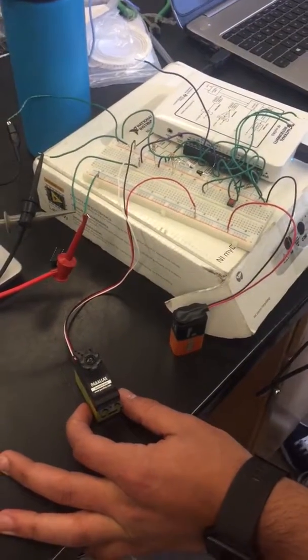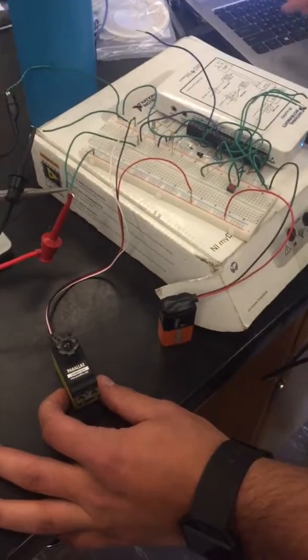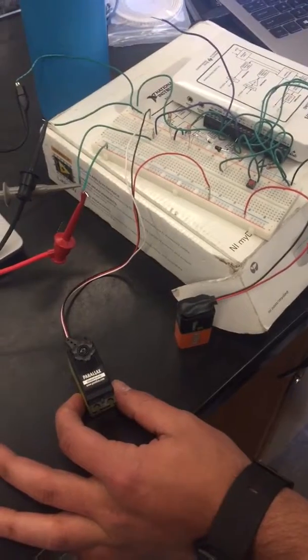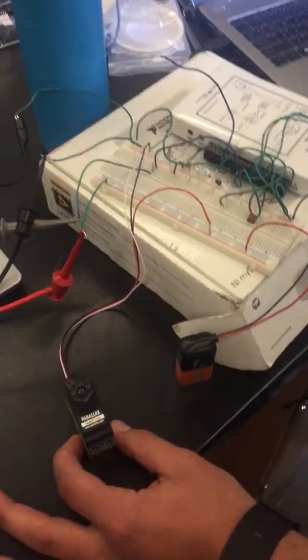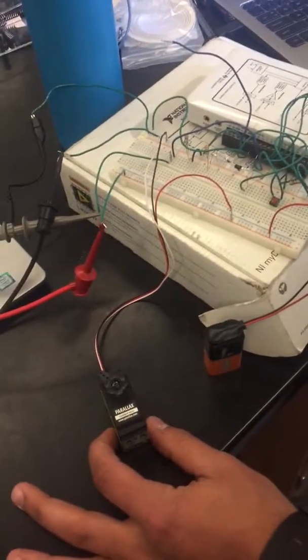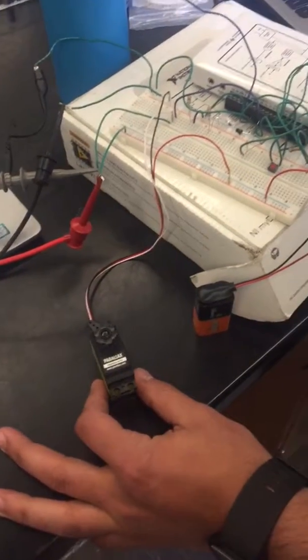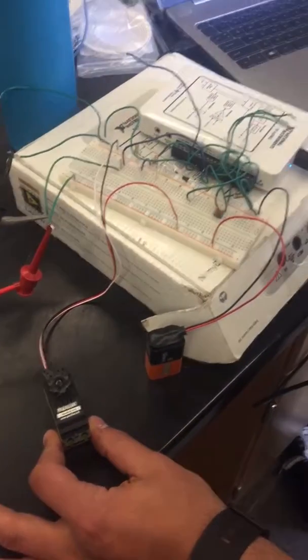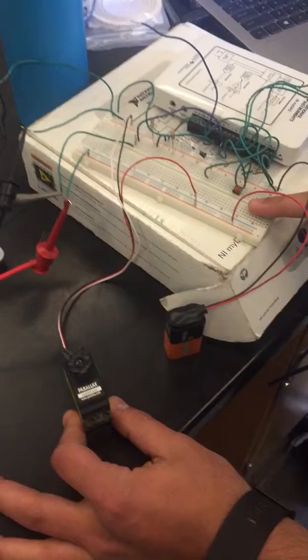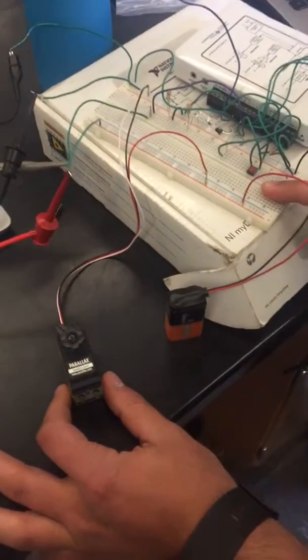All right, this is electronics group number three with Shady, Michael, and Matt. We are doing project four with a servo motor, an IR LED, a photo transistor, and a button.